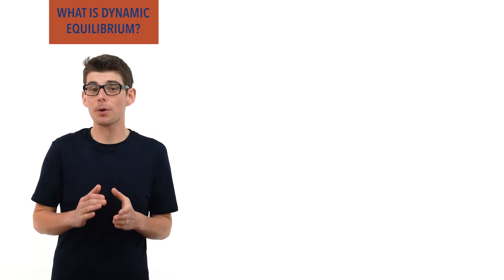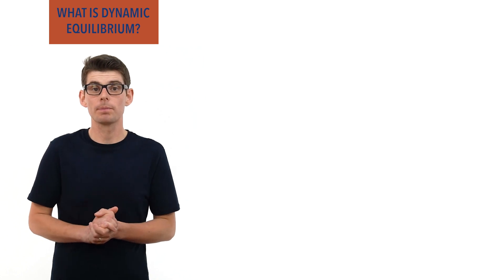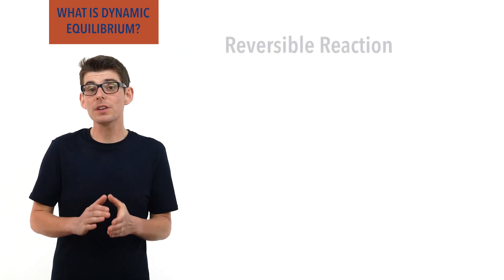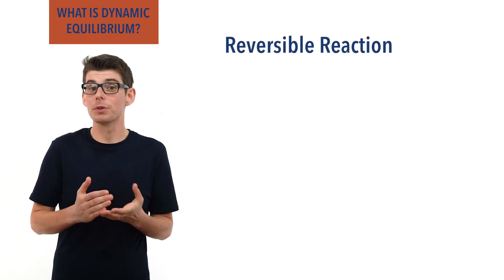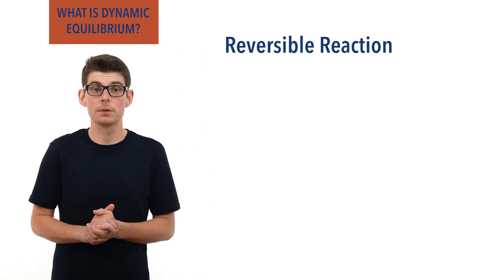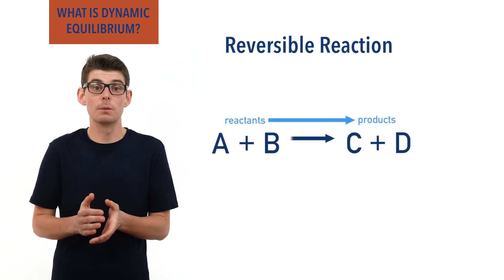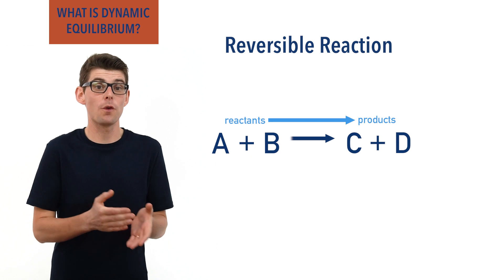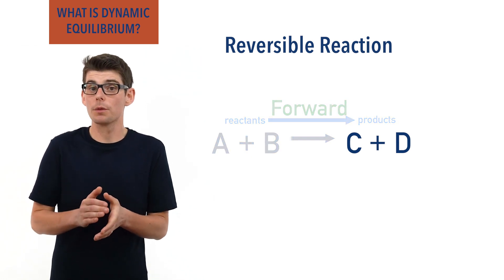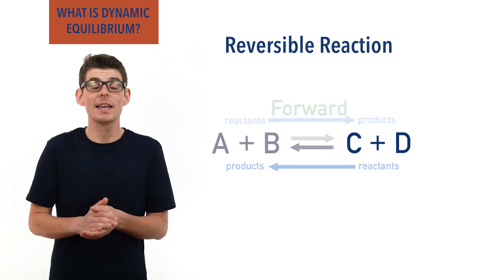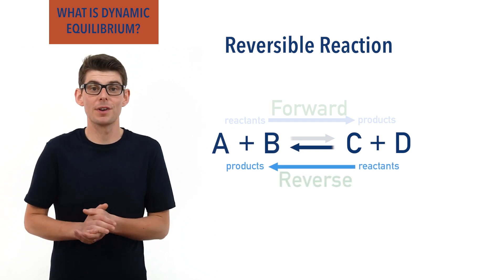Many reactions and processes in chemistry are reversible. A reversible reaction is one in which the reaction can proceed in both directions. Reactants can react to form products in what is called the forward reaction, and these products can also react to form the reactants in what is called the backwards or reverse reaction.